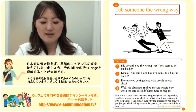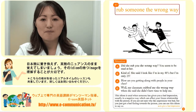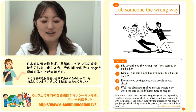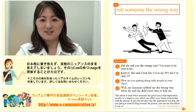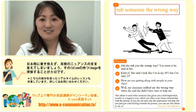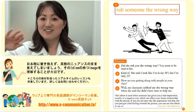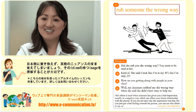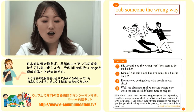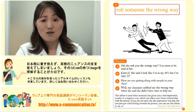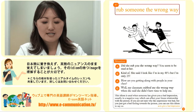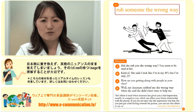Did she rub you the wrong way? You seem to be mad at her. Kind of — she said I look like I'm in my 40s, but I'm only 25. Let's try one more. How are you getting along with people in your class? Well, my classmate rubbed me the wrong way when she said she didn't have time to help me.